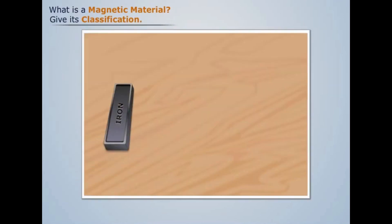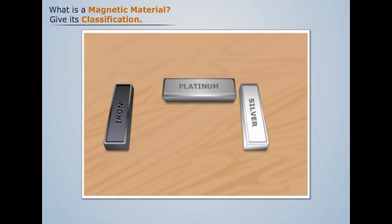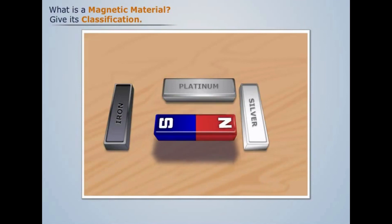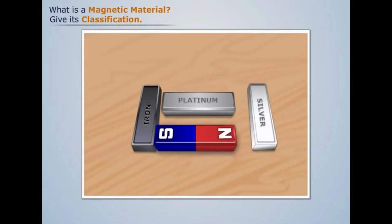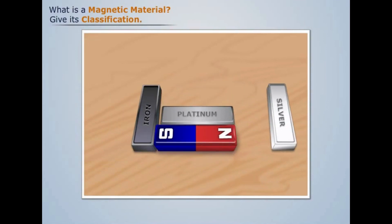Consider an iron bar, platinum bar, and silver bar. Now place a magnet between them. We see that these three bars of different materials show a different response towards the magnetic field of the magnet.